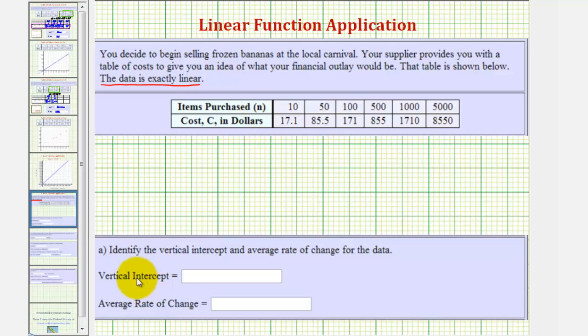For part a, we're asked to determine the vertical intercept and the average rate of change. Well, the vertical intercept would be the point where the input is zero, and the output would be c of zero. And then the average rate of change would be the same as the slope of the line containing these six ordered pairs. Let's begin by determining the slope, or average rate of change.